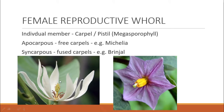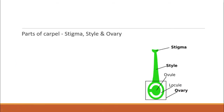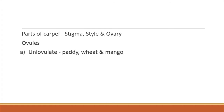The three parts of the carpel are: stigma (the first one), style (the middle one), and ovary (the last one). The ovary could have one or more ovules. If it has a single ovule, it is called uni-ovulate — examples are paddy, wheat, and mango. If it has more than one ovule, it is called multi-ovulate — example is lady's finger, called bindi in Hindi, or okra.